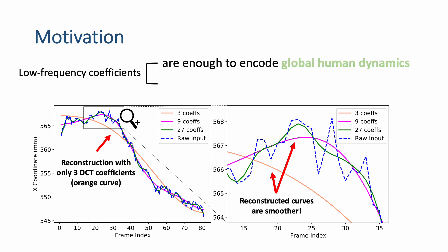The results show that low-frequency coefficients are enough to encode global human dynamics of the input sequence, and they filter out noise in the raw trajectory so that they are smoother.